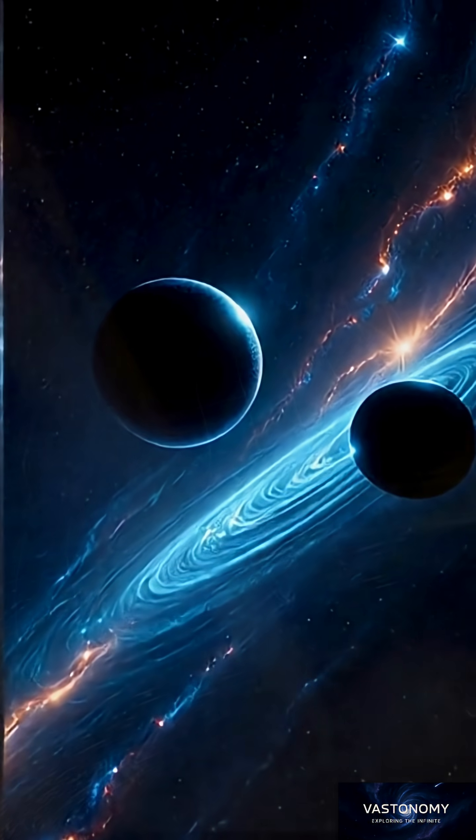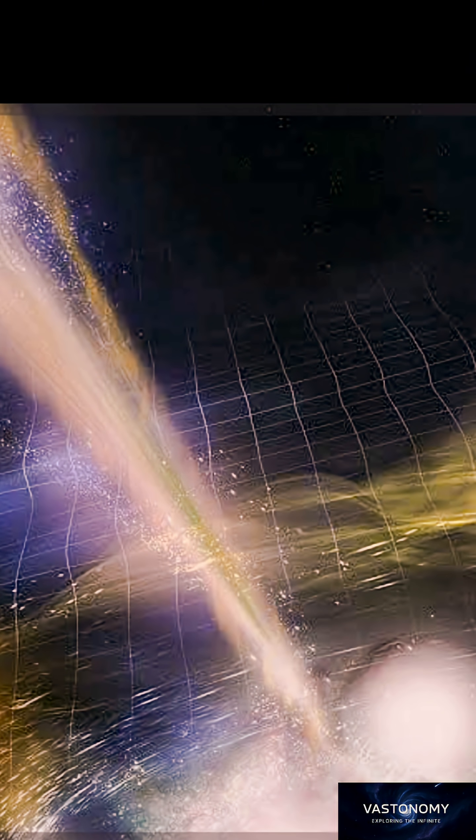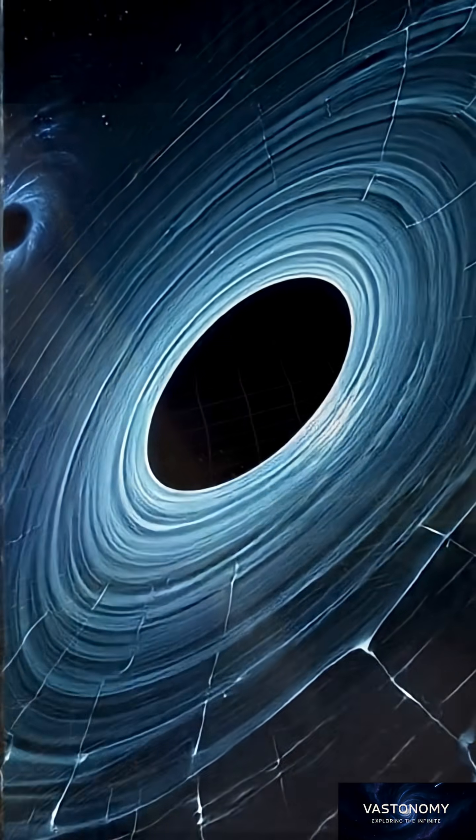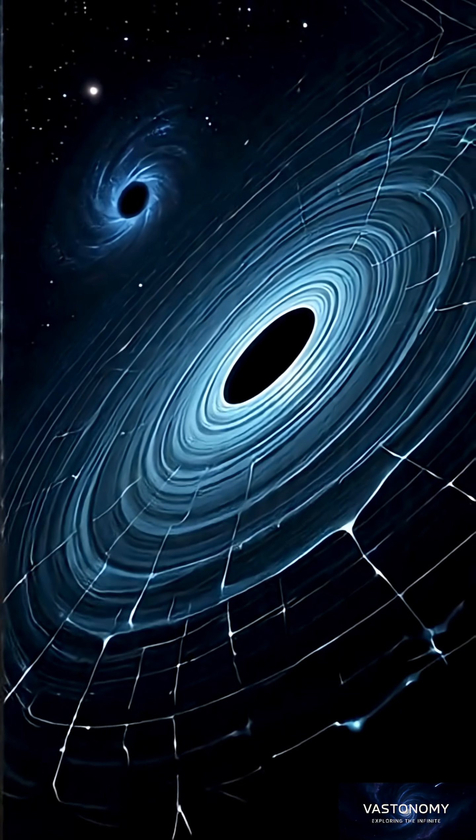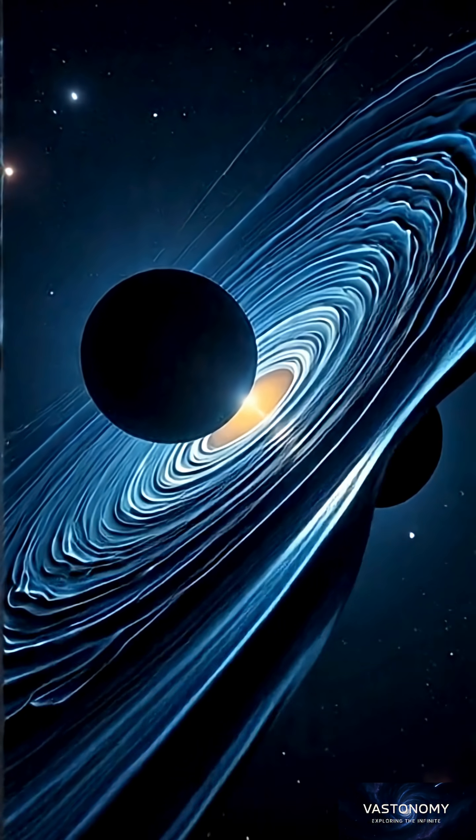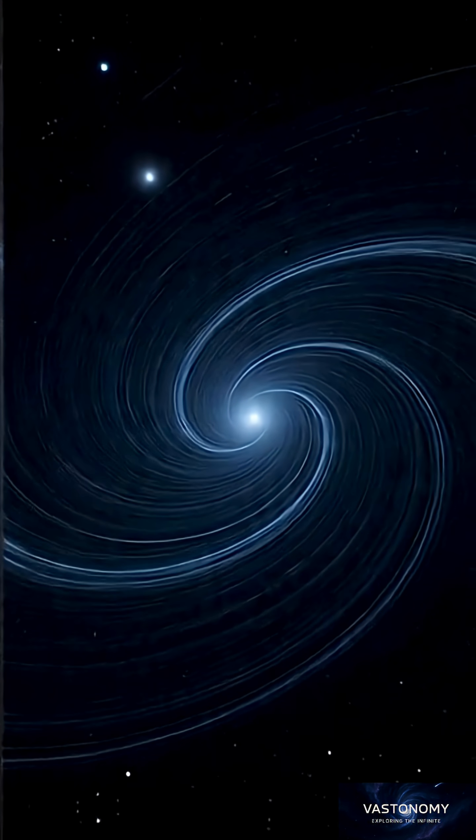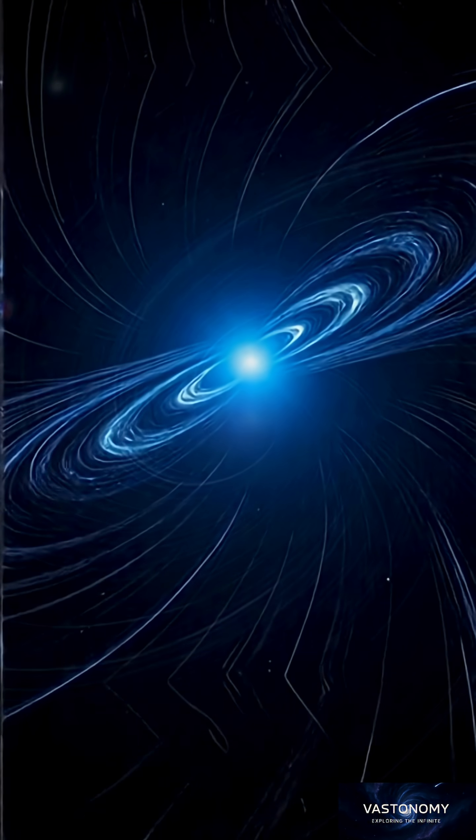When massive objects like black holes or neutron stars collide, they send shock waves through this cosmic fabric. These are called gravitational waves, and they travel across the universe at the speed of light.